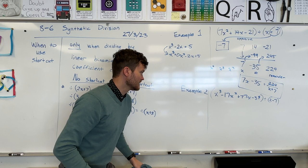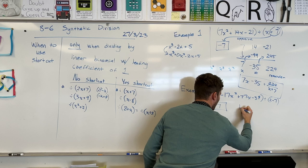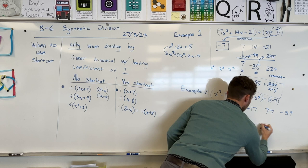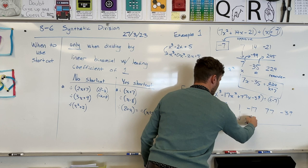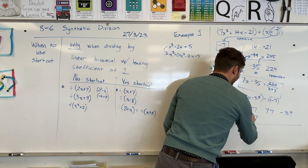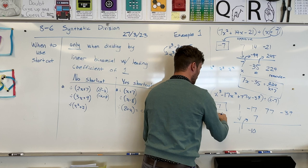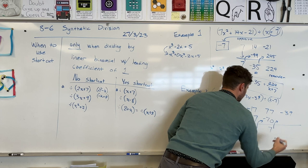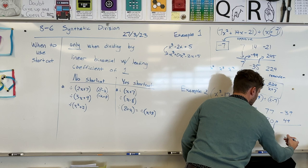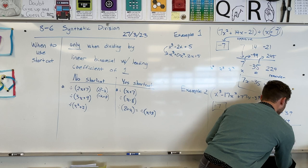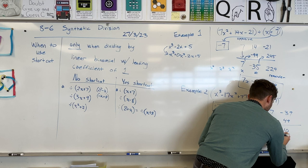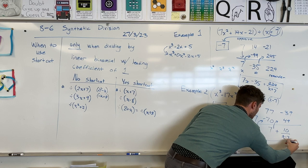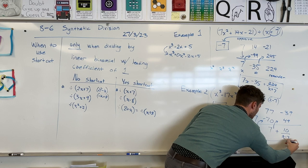Let me go as fast as I can. Positive 7 goes on the left — opposite of the divisor. Coefficients: 1, negative 17, 77, negative 39. Skip a line, draw the line. 1 comes straight down. 1 times 7 is 7. Add: negative 17 plus 7 is negative 10. Pay the toll: negative 10 times 7 is negative 70. Add: 77 plus negative 70 is 7. Pay the toll: 7 times 7 is 49. Add: negative 39 plus 49 is 10. Remainder is 10 over (x minus 7). Answer: x squared minus 10x plus 7 remainder 10 over (x minus 7).